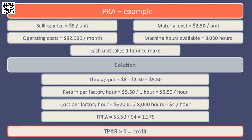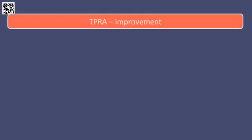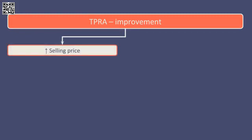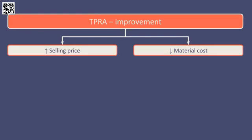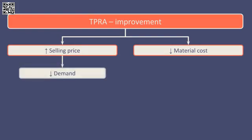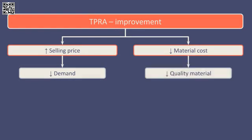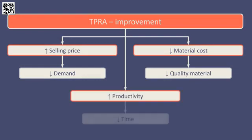As this is greater than 1, we will make a profit if we make this product. We could see this by simply looking at the respective return and cost per hour figures — the return is higher than the cost, so we must make a profit. The ratio is important for ranking products in multi-product decision making processes. To improve the throughput accounting ratio, we could increase selling prices or reduce material costs to increase throughput, though this may result in a reduction in demand or lower quality materials leading to higher wastage. We could also look to improve productivity, thereby reducing the time spent making each unit, and as a result make more units in the time available.